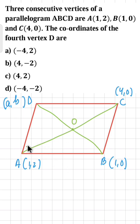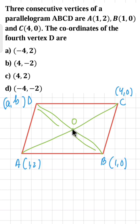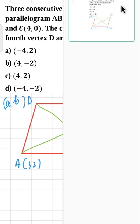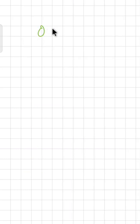So AO and OC are equal, meaning O is the midpoint of AC. Similarly, DO and OB are equal, meaning O is the midpoint of DB as well. So first I will find O, and then using O I will find D. Since O is the midpoint of AC, and I know the coordinates of both A and C, I can find the coordinates of O.